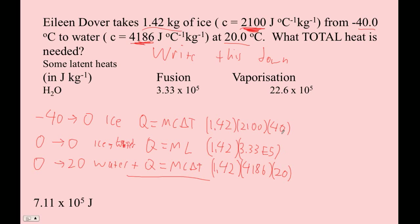So now I'm just going to bust this out. 1.42 times 2100 times 40. This is 119,280. That's a fair amount of joules. How about 1.42 times 3.33 E5? Well, that's 472,360 joules. And then 1.42 times 4186 times 20 is, wow, what is that? What is that number? I can't even wrap my mind around it. That's 118,882.4 joules, apparently.